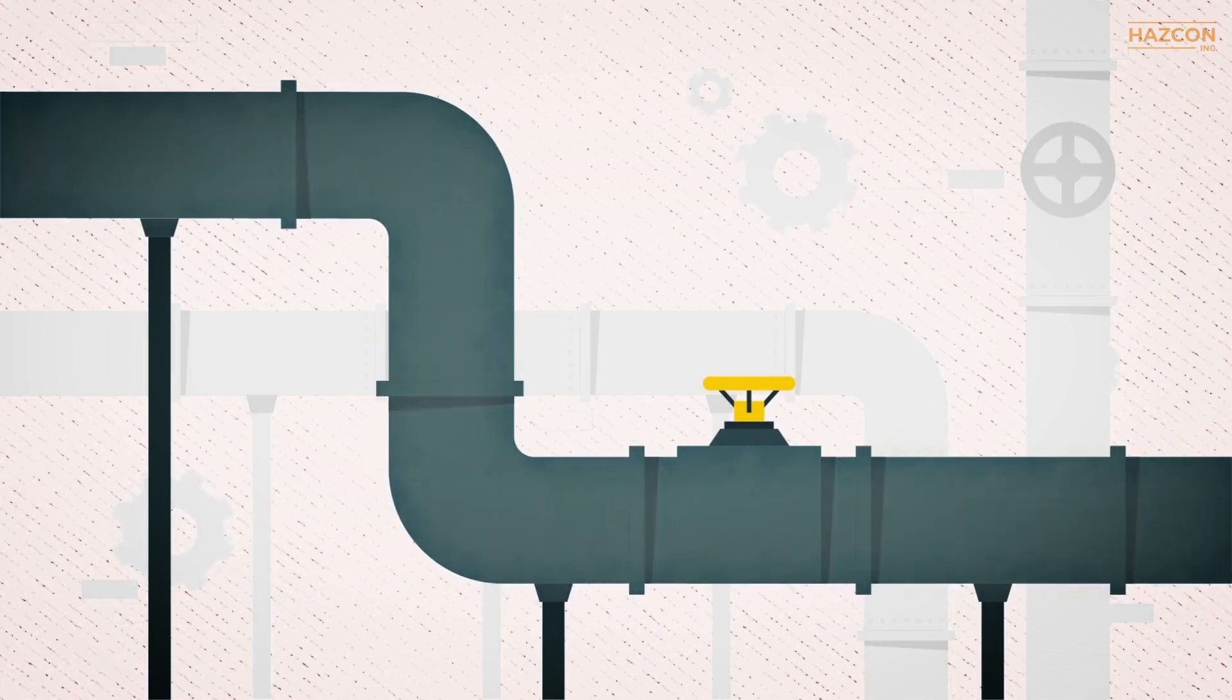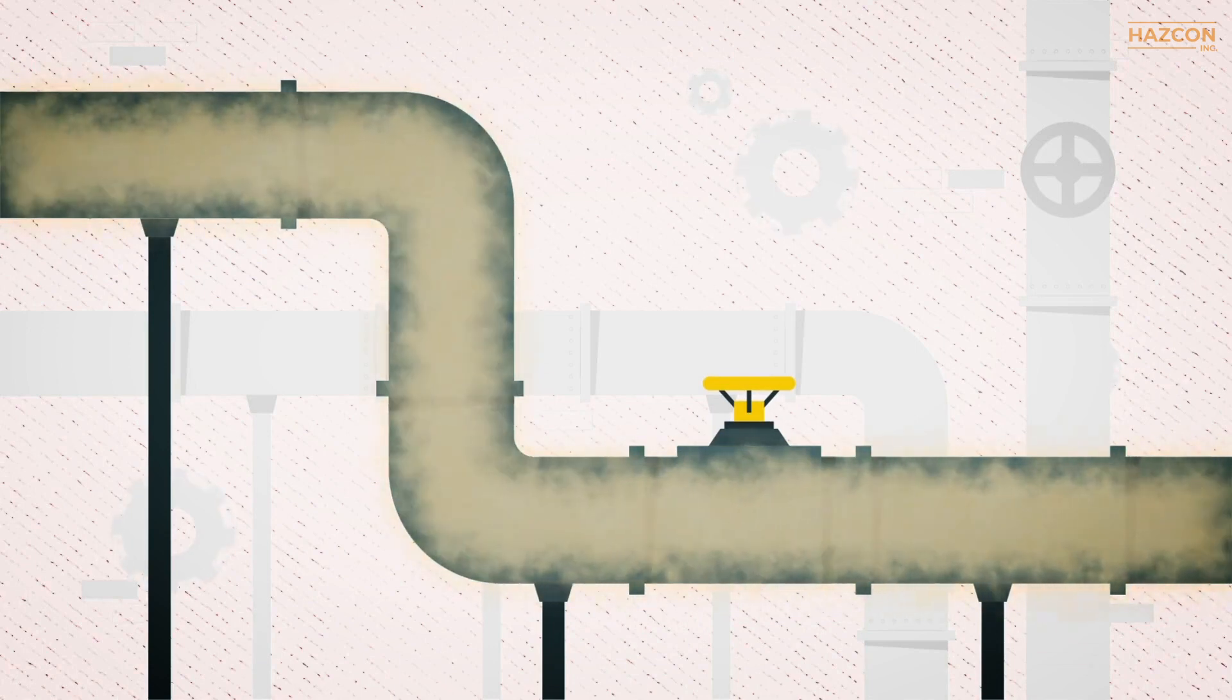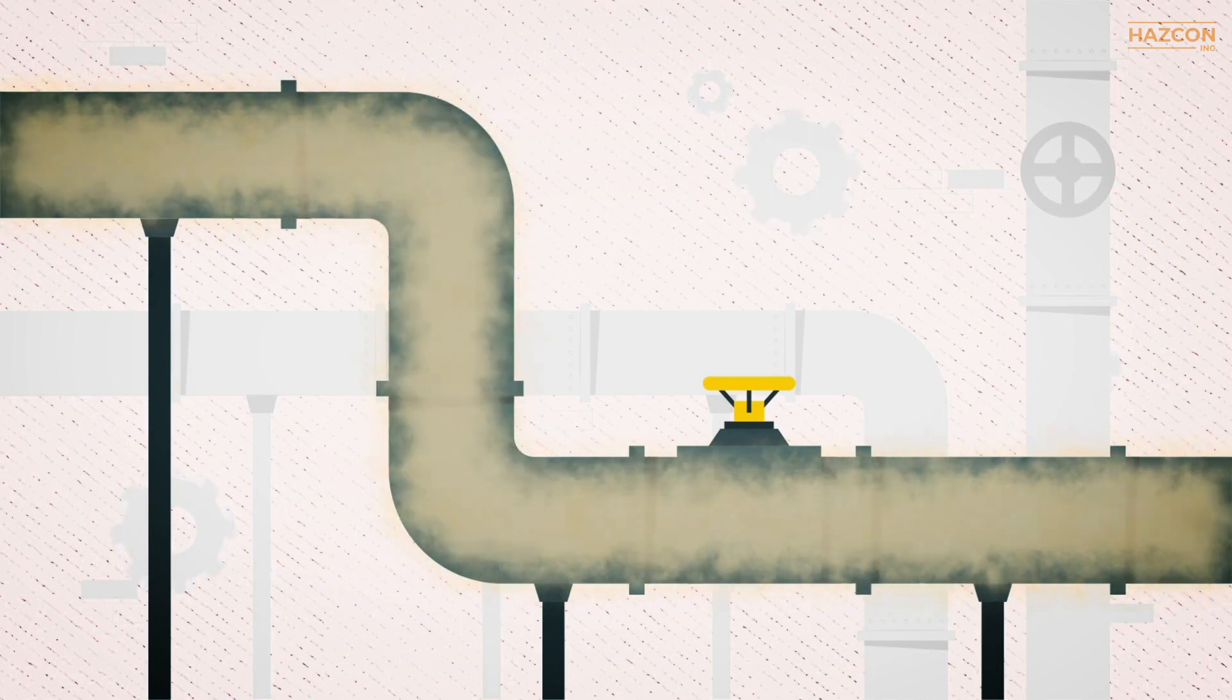Zone 20 mainly refers to areas inside closed containers, pipes, and apparatus in which combustible dust in the form of a cloud is present continuously, for long periods or frequently.